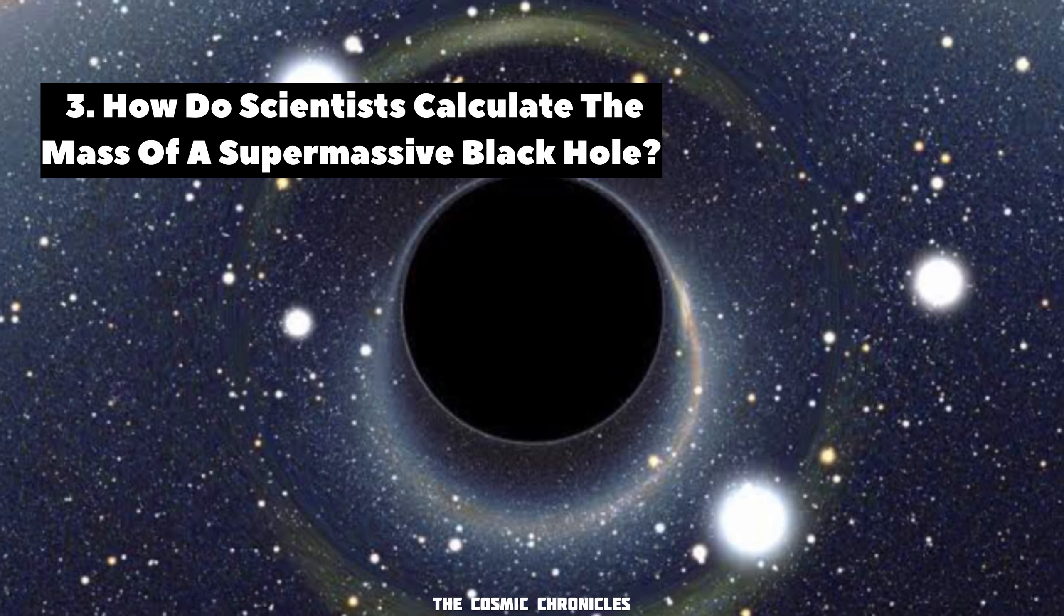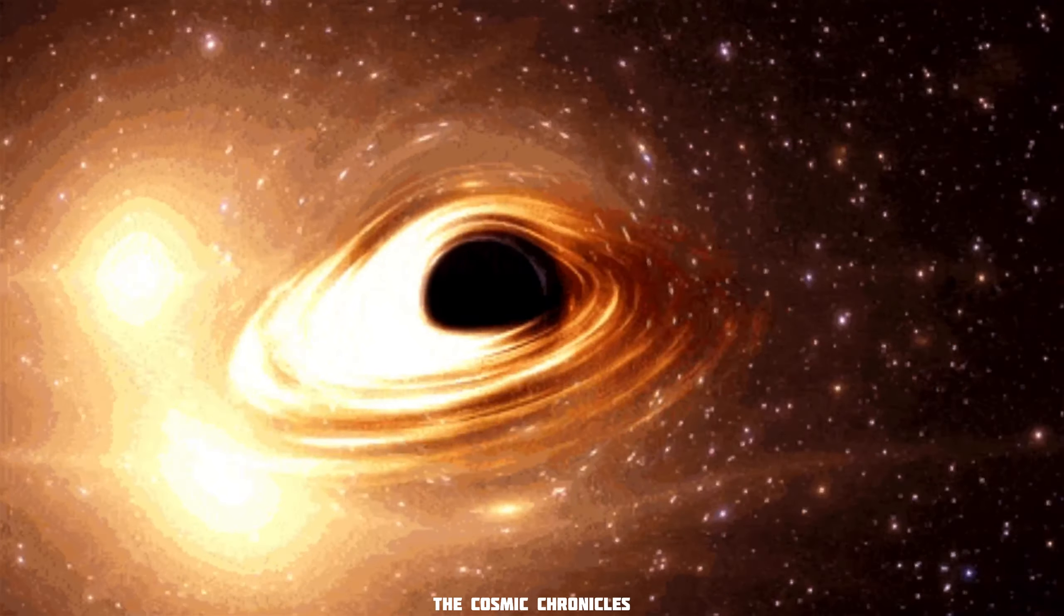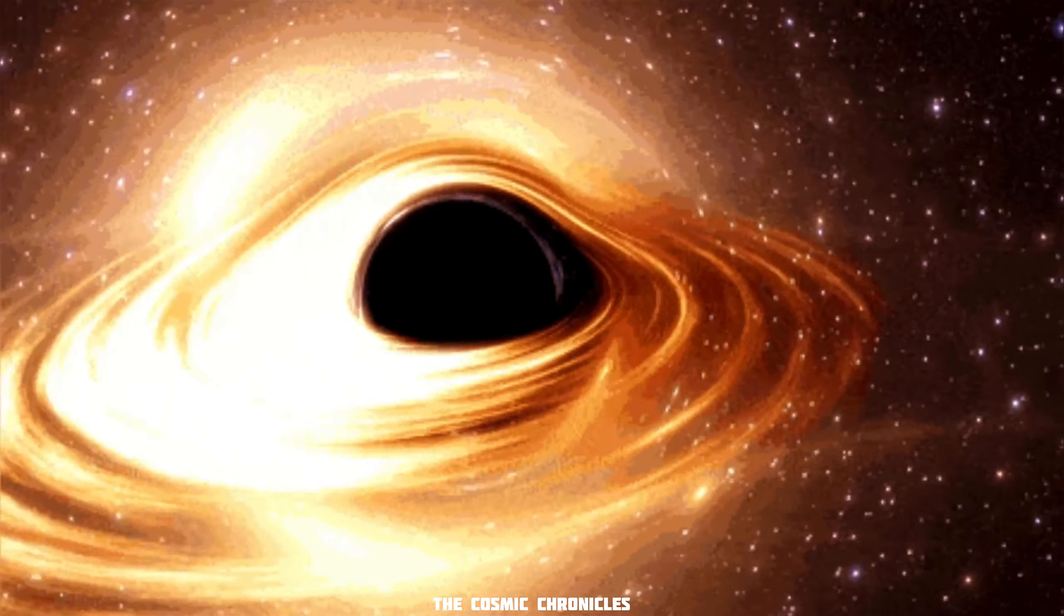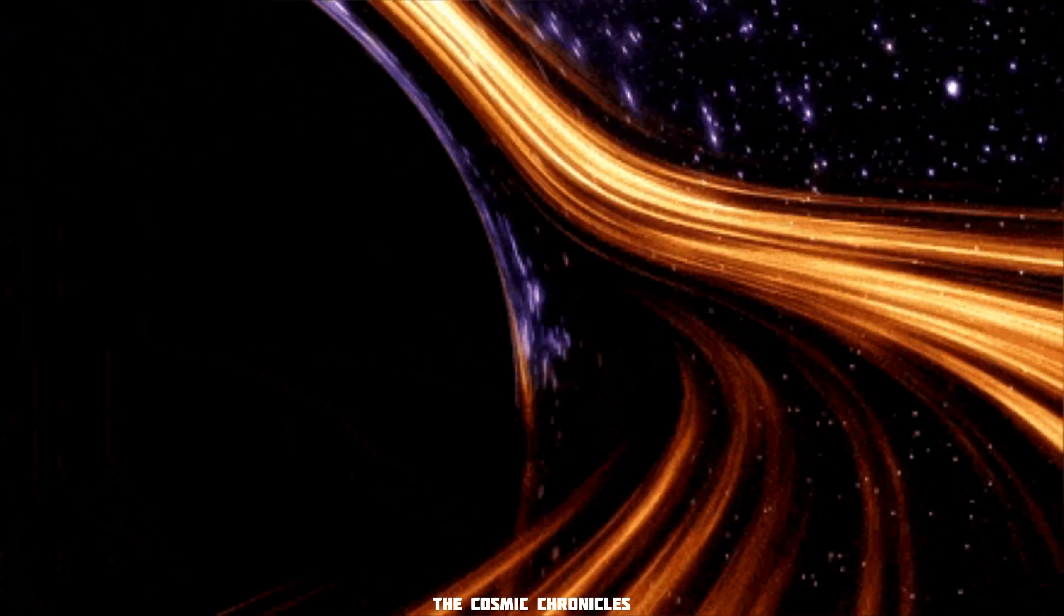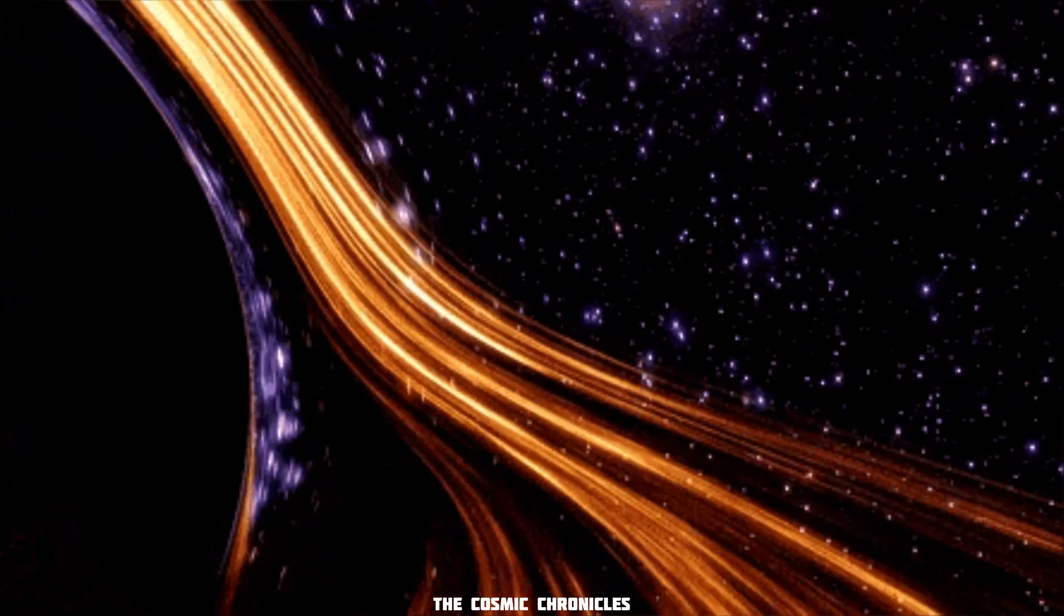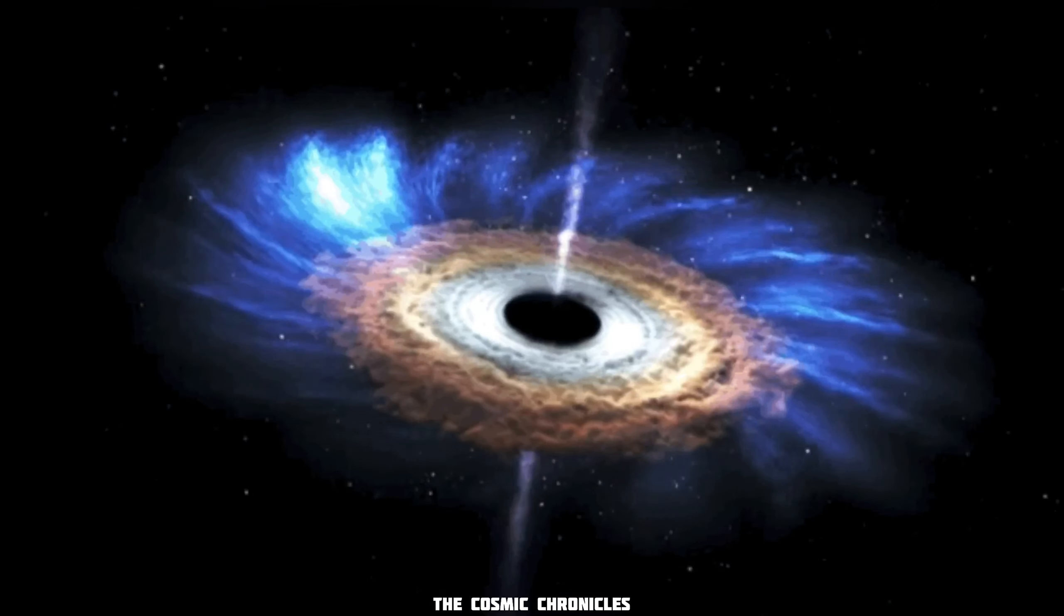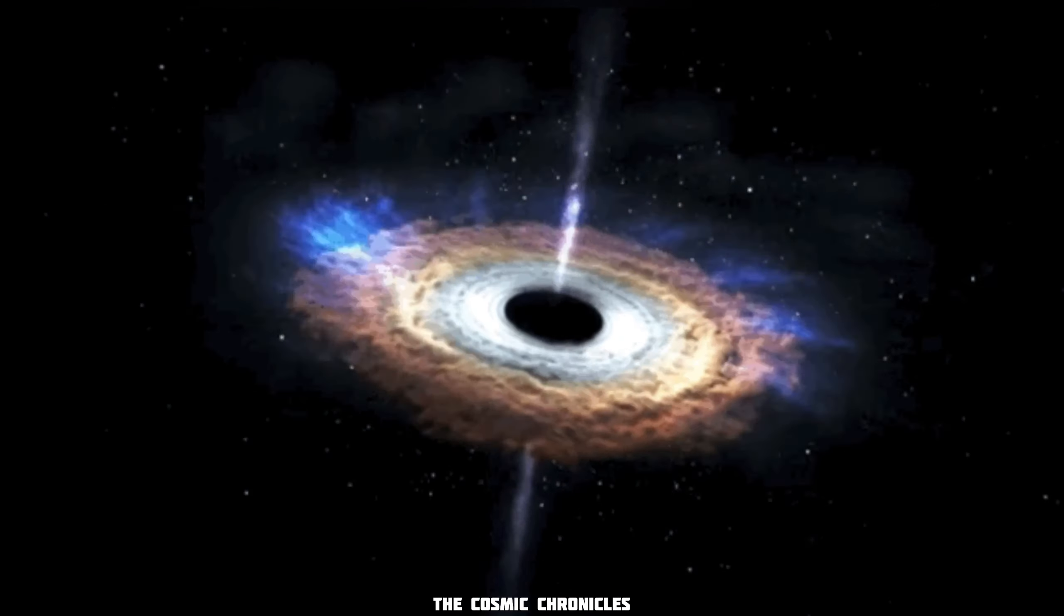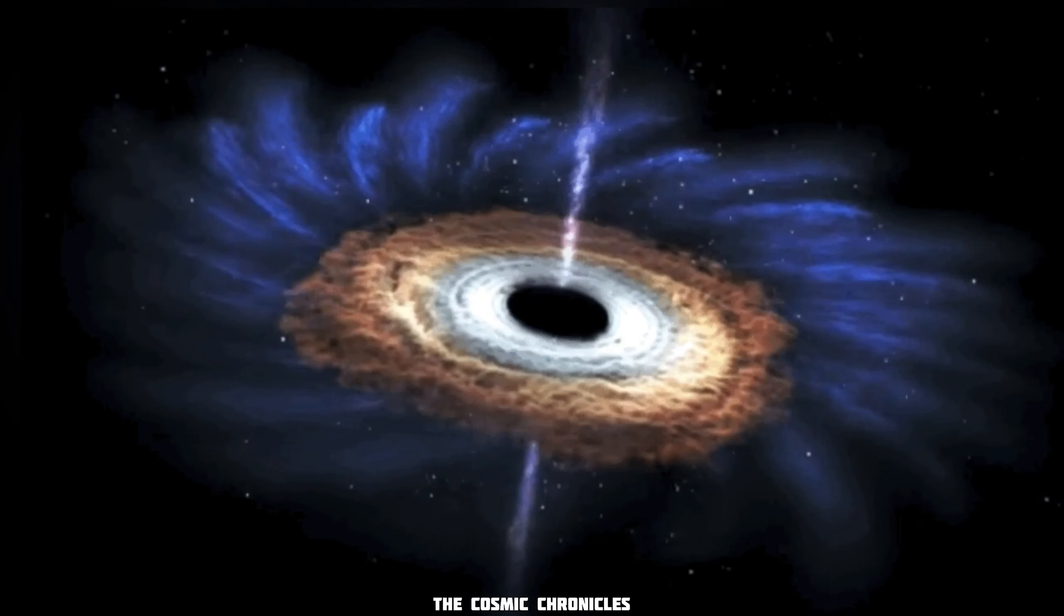Question 3: How do scientists calculate the mass of a supermassive black hole? The research involves looking at the motions of stars in the centers of galaxies. These motions imply a dark, massive body whose mass can be computed from the speeds of the stars. The matter that falls into a black hole adds to the mass of the black hole. Its gravity doesn't disappear from the universe.